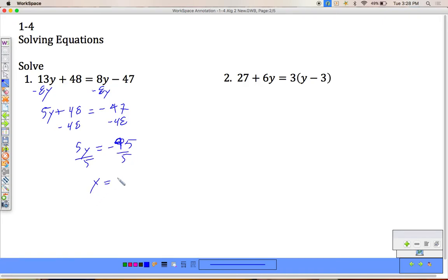Alright, if you can't do negative 95 divided by 5 in your head, think of negative 100. 5 goes into negative 100 20 times, or negative 20 times. So that means 5 goes into negative 95 negative 19 times. Do some rounding if you need to.